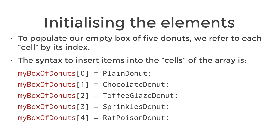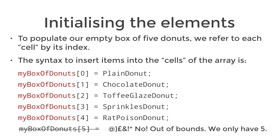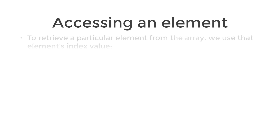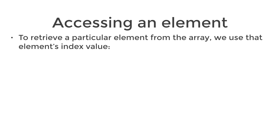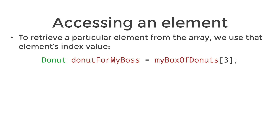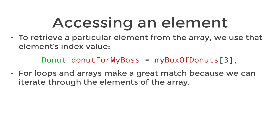And for the last element in the array it would be myBoxOfDonuts[4] equals rat poison donut. Remember you wouldn't use myBoxOfDonuts[5] because that would be out of bounds — that's outside the range of the array because we only have five elements. Similar to assigning data to part of the array, we also use this index to retrieve a particular element from the array. At this point you can probably already see how loops and arrays make great partners, because you can iterate through the array using a loop.